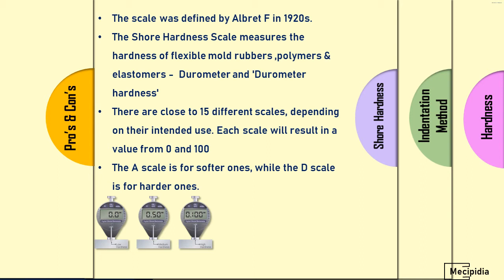A scale is used for softer materials and D scale for harder materials. You can see the configuration of A and D scales - both are applied by manual force. A scale has a 35-degree cone tip with 1.4mm diameter and 8 Newton load. D scale has a 30-degree cone, same 1.4mm diameter, and load up to 44.45 Newton.